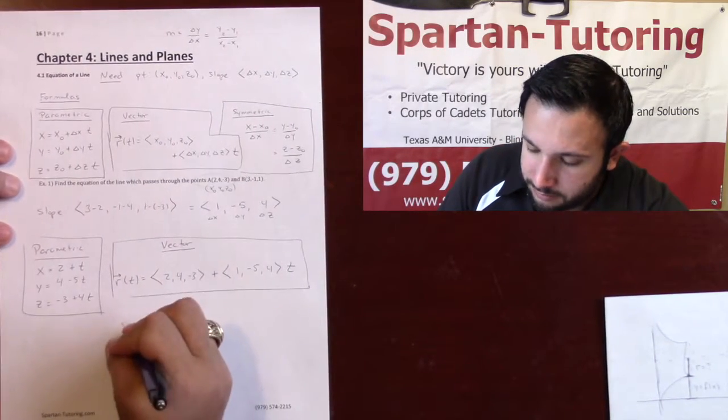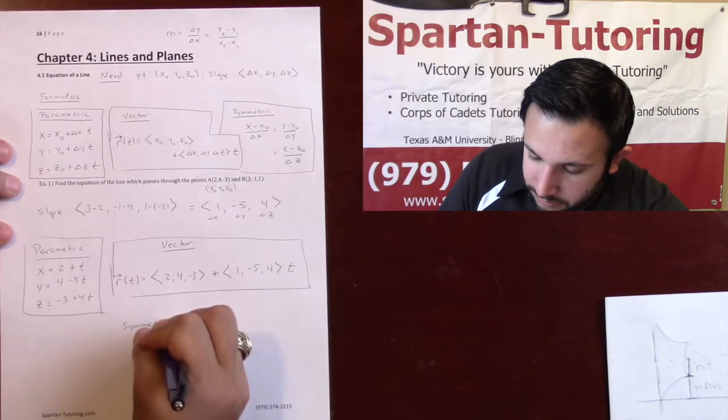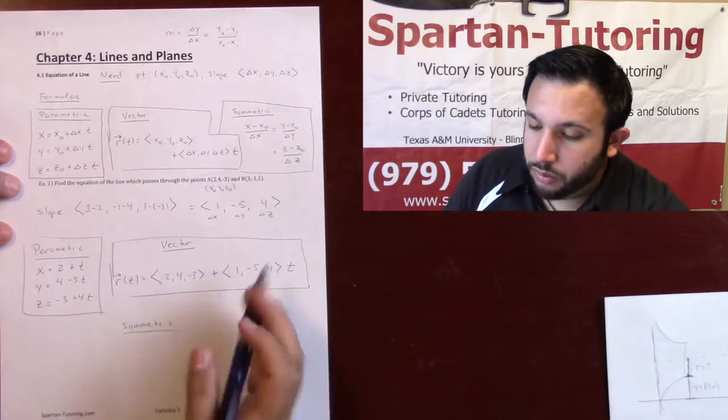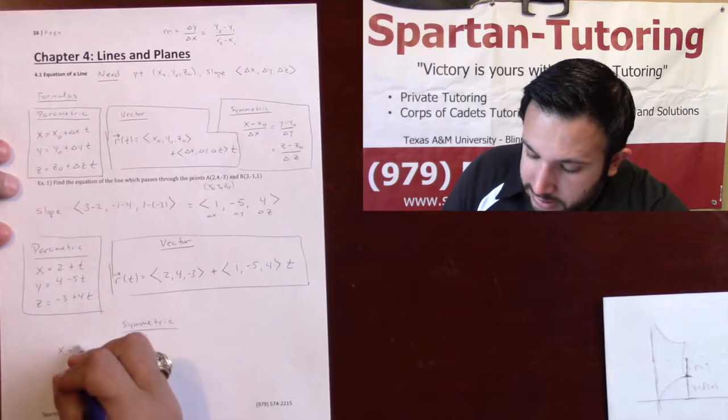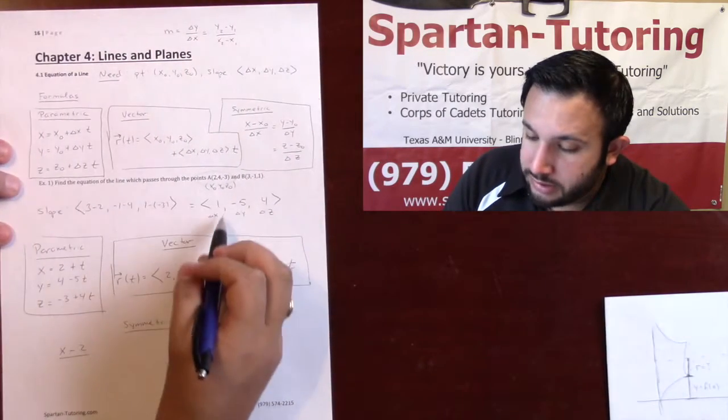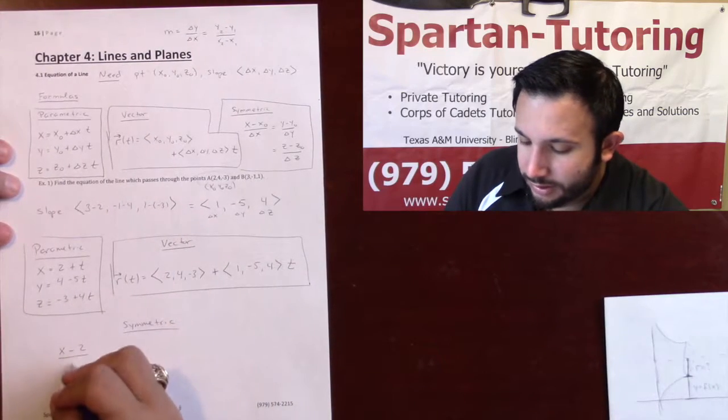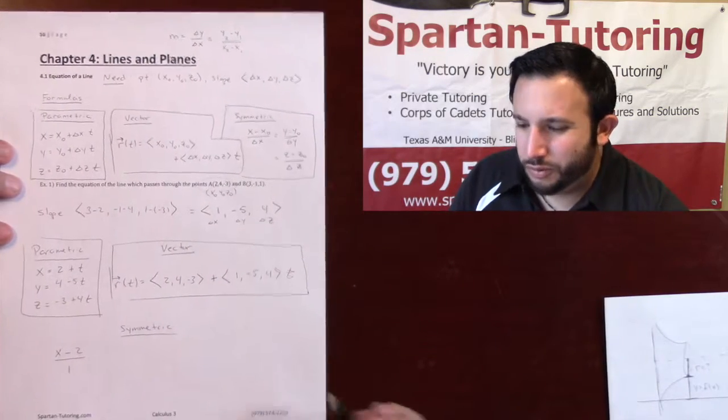And finally, for symmetric, the way you would write this out is you're going to do x minus x naught, so x minus 2, over delta x, that's 1, so you can just write that as over 1, you don't even have to write that